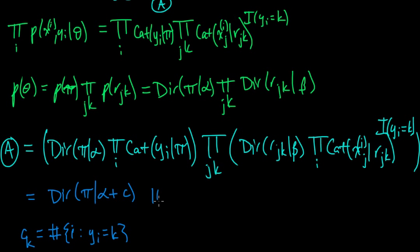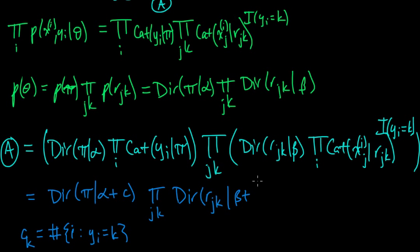And this part — the product over J and K — again the Dirichlet absorbs the categorical, and we get a Dirichlet over R_JK with parameter β plus D_JK.